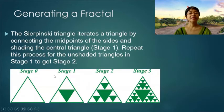And this triangle is called the Sierpinski triangle. It iterates a triangle by connecting the midpoints of the sides and shading the central triangle. Repeat this process for the unshaded triangles in stage one to get stage two and so on.